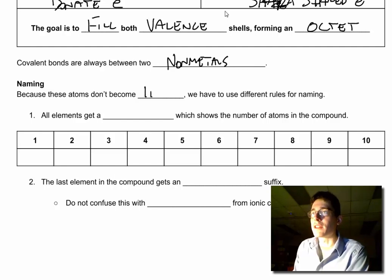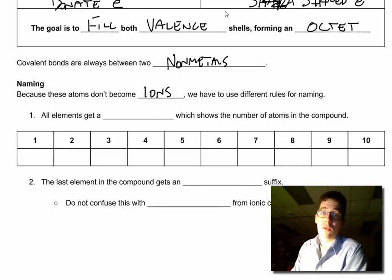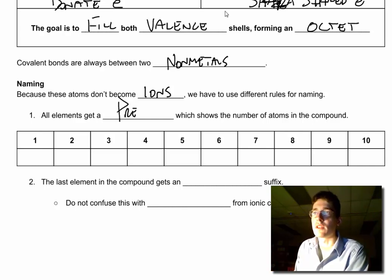Because these atoms don't become ions, we have to have different rules for naming. I don't know how many atoms I have. With ionic bonds, I know how many atoms there are because I have to balance out my charges. All elements get a prefix in covalent bonding.